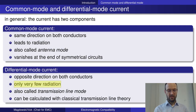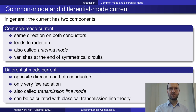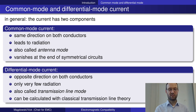That's why the differential mode current has only very little radiation — no problems in terms of EMC. With classical transmission line theory you can calculate this current, and that's why it is also sometimes called transmission line current — it's the current you would like to have on a transmission line to do useful work.